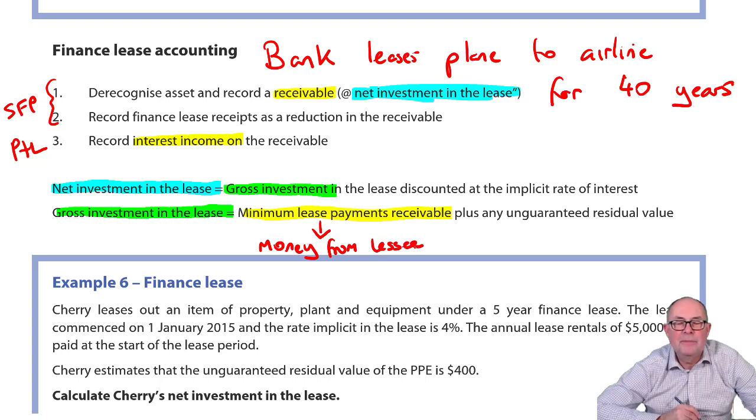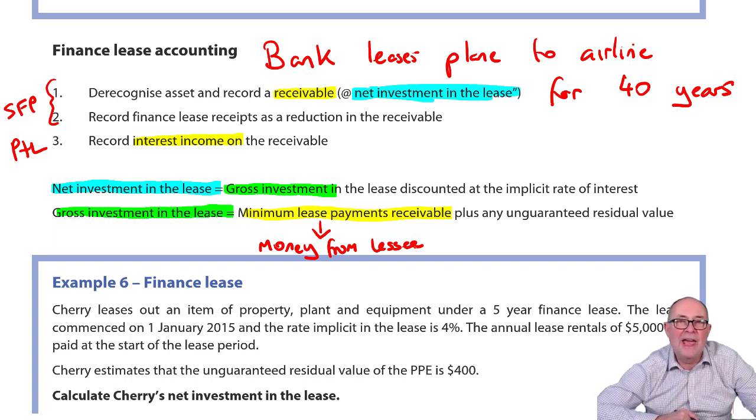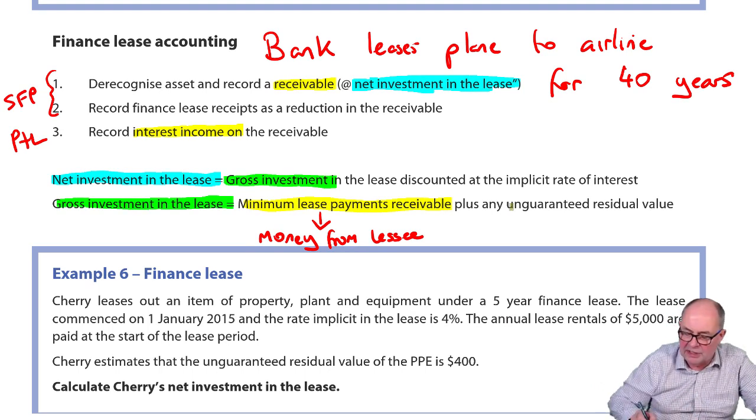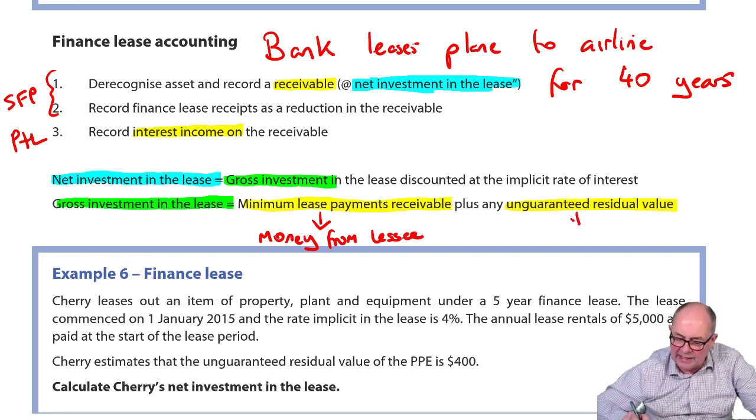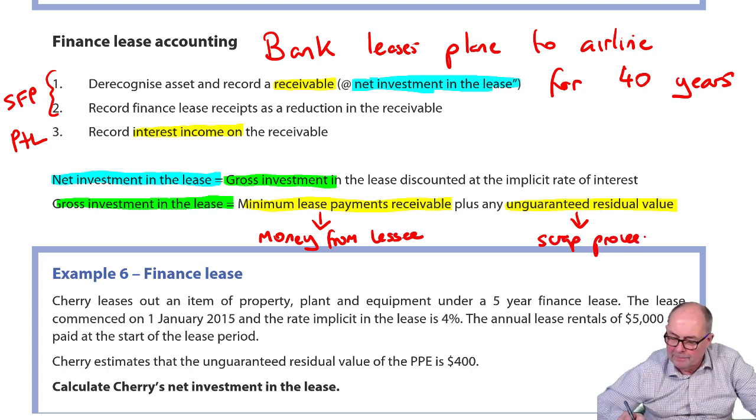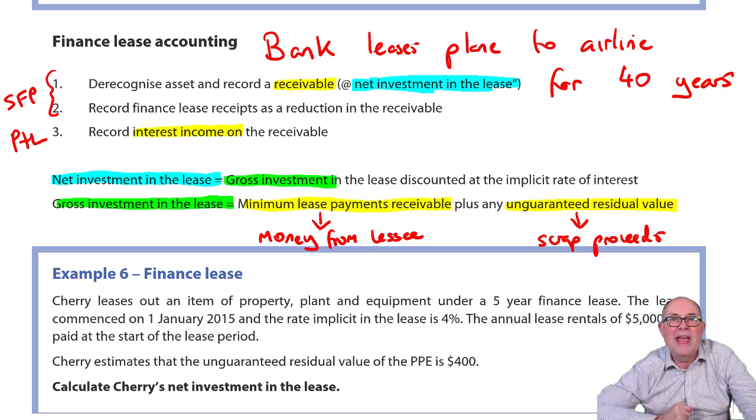At the end of the lease, the lessee will give back the asset and say thank you, there you are. The bank is now sitting there with a big aeroplane in its car park. Clearly, they'll have to sell it to someone else, another airline or scrap or something. And that's known as unguaranteed residual value. So, it's not always scrap proceeds, but that's an easy way to think about it. So, the bank is saying my investment in the lease is the money coming from the lessee, plus any scrap or whatever at the end of the term of the lease, discounted to present value.